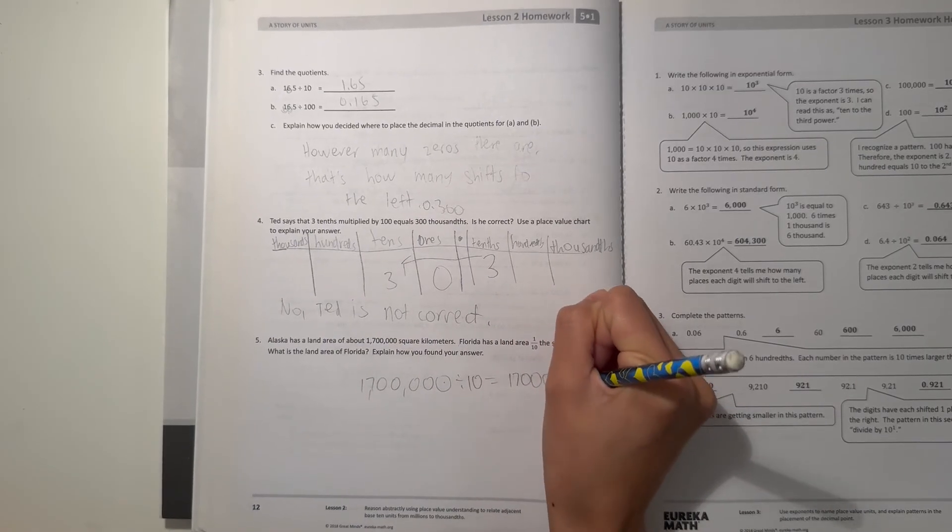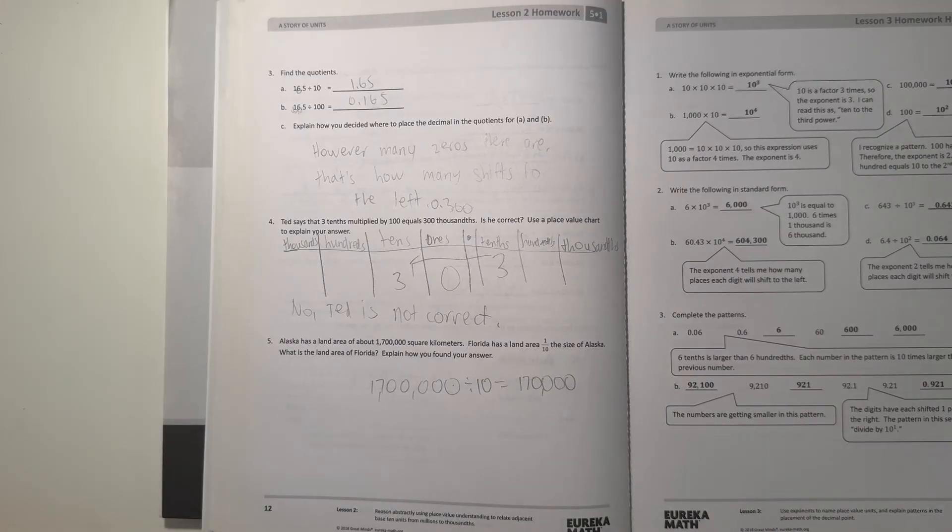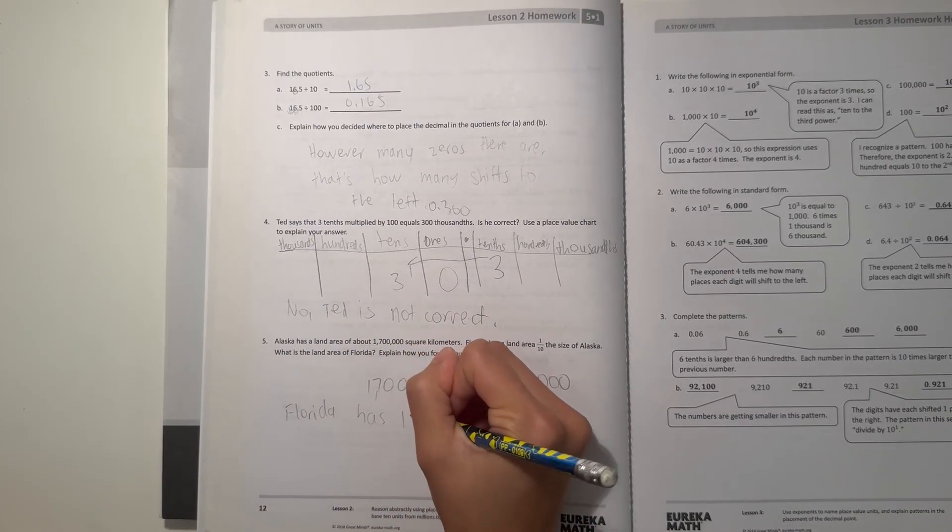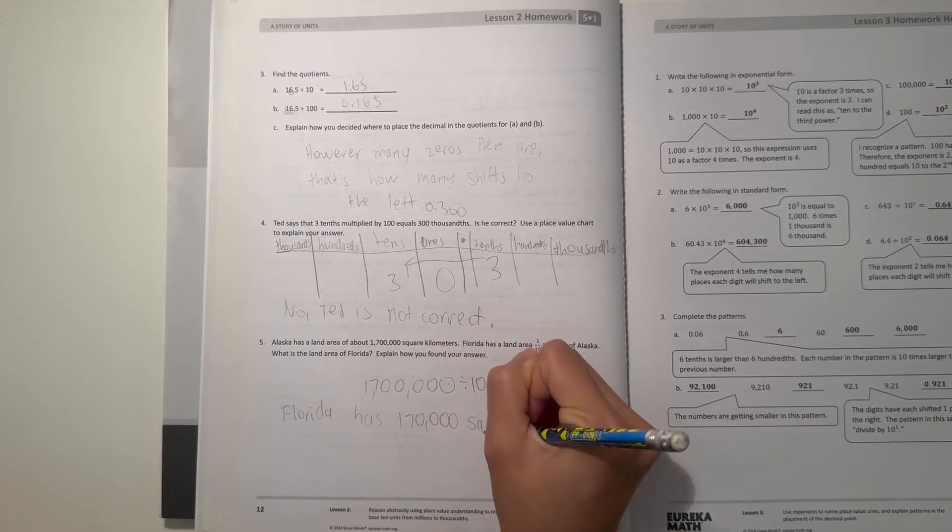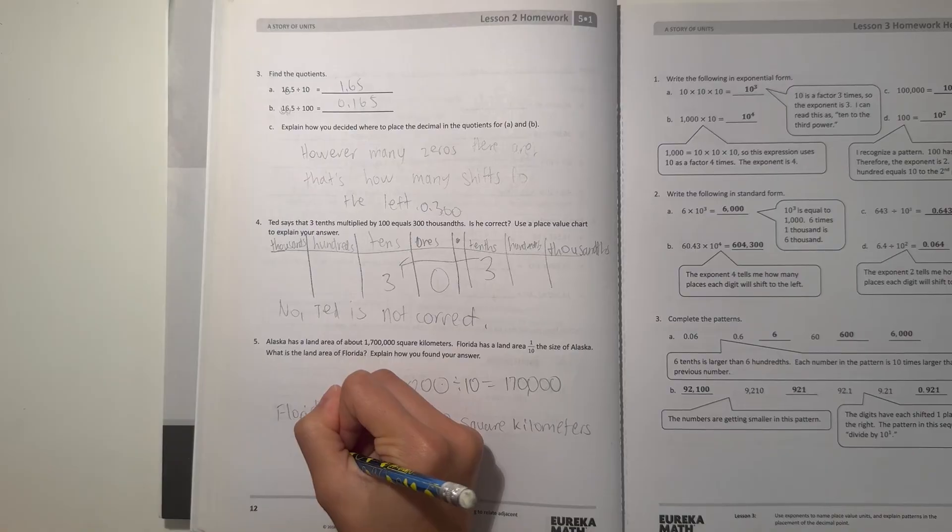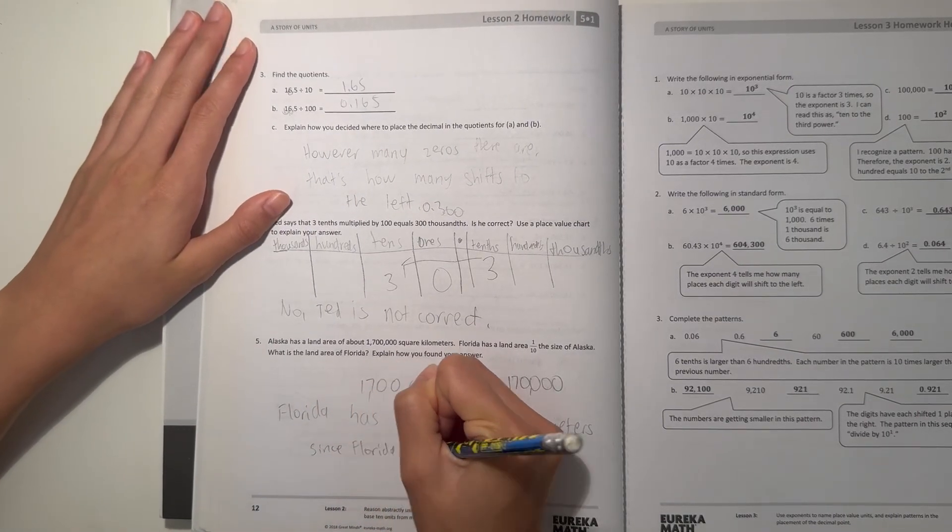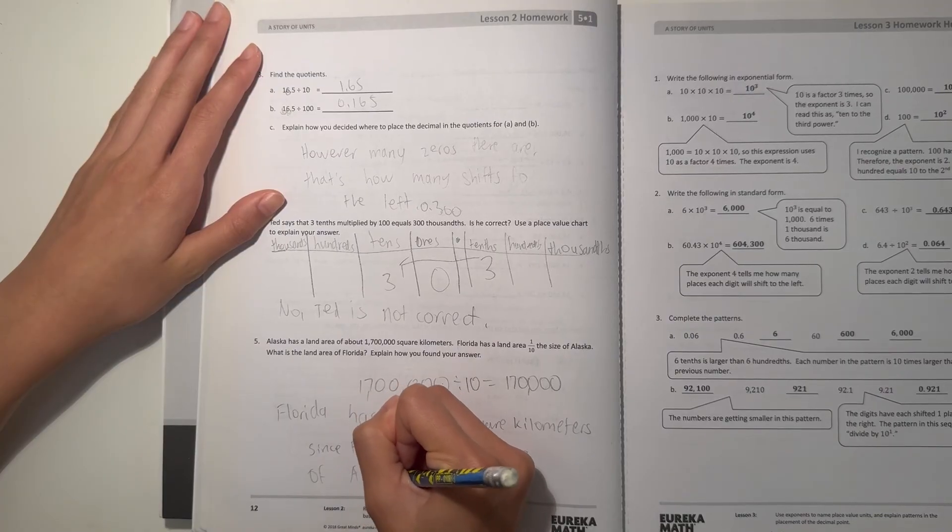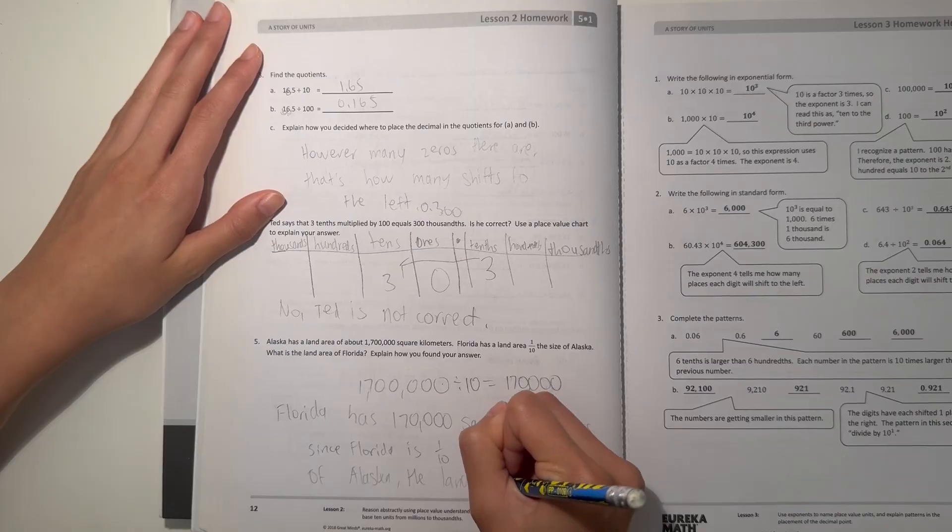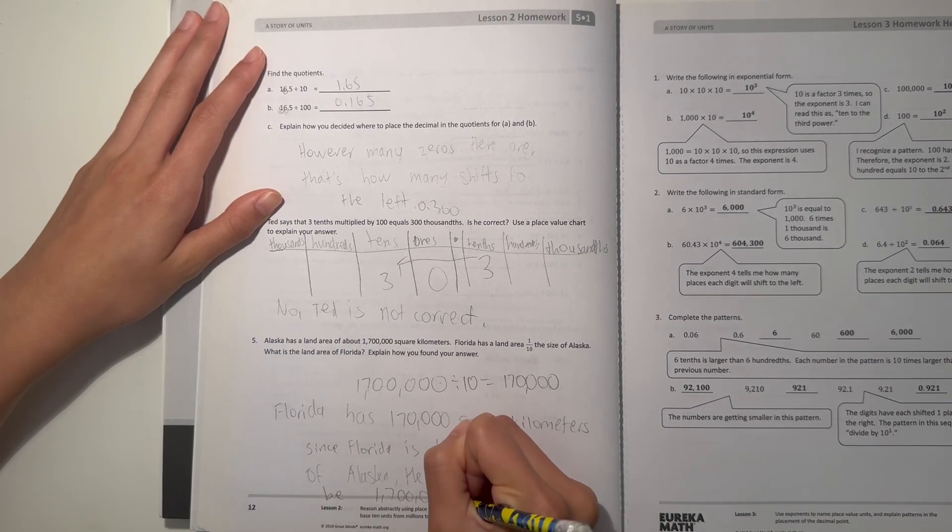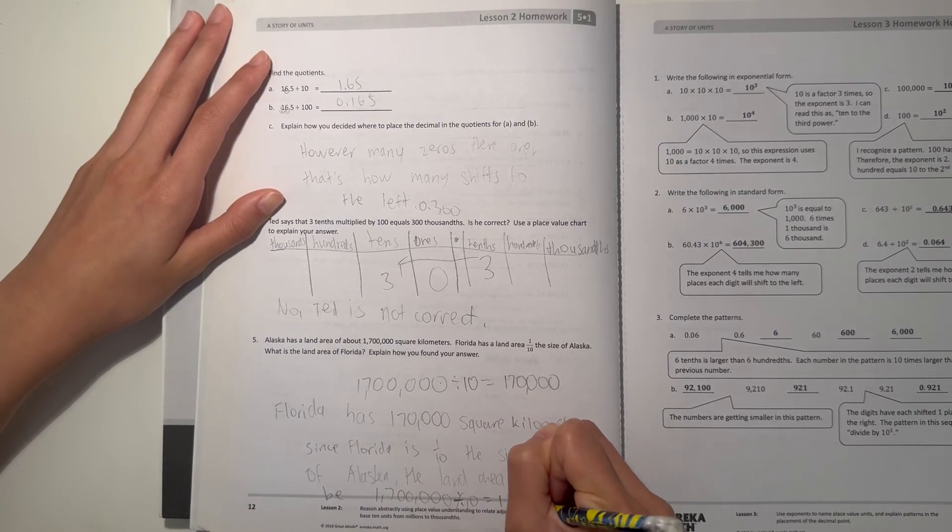So that'd be 170,000. So our answer would be Florida has 170,000 square kilometers. And how I found our answer, since Florida is one tenth the size of Alaska, the land area would be 1 million 700,000 divided by 10, which gives us 170,000.